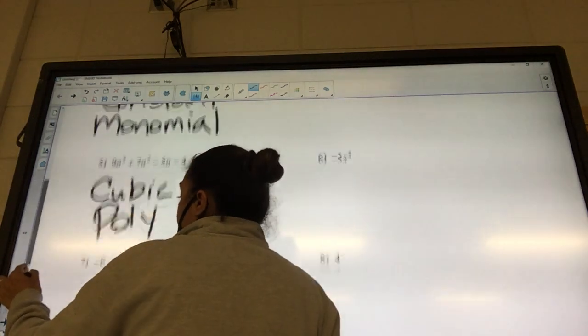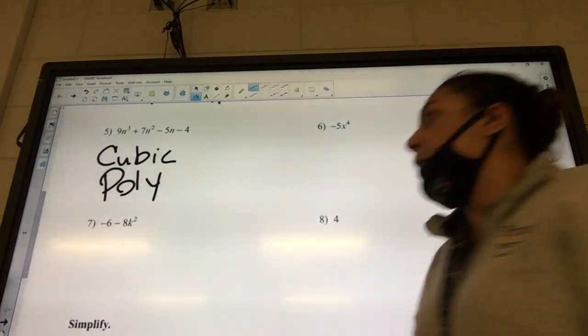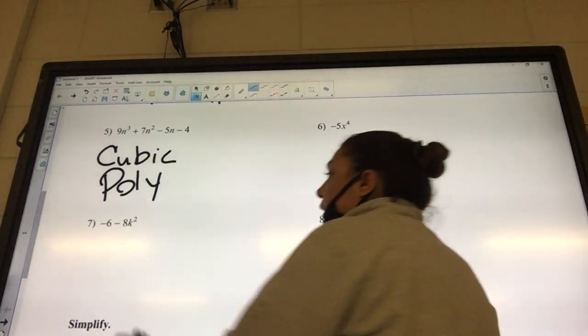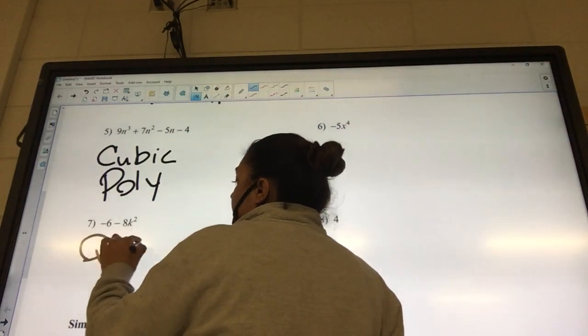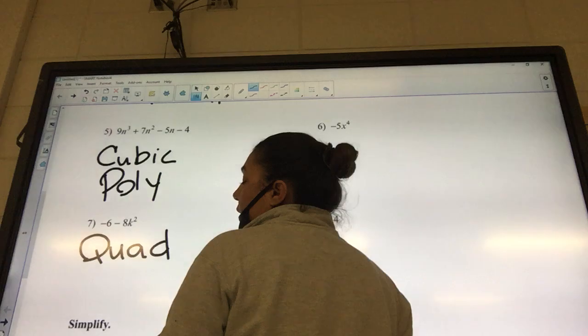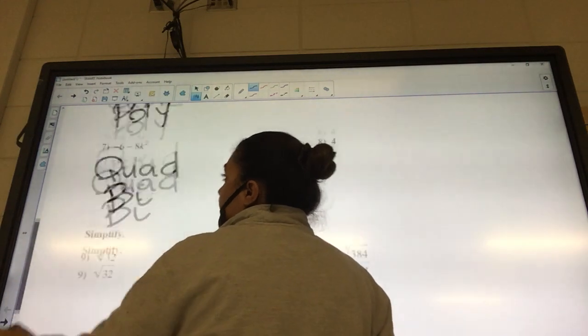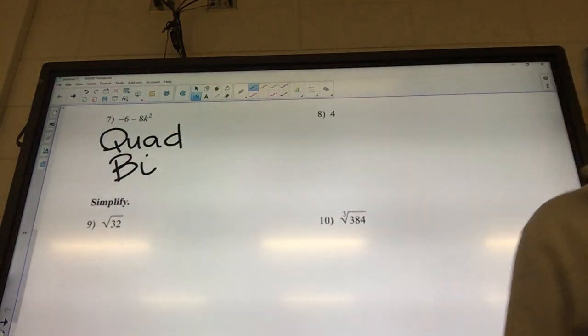Okay, seven. What's the highest exponent? Two, so it's going to be quadratic. How many pieces? Two, so it's going to be a bi.